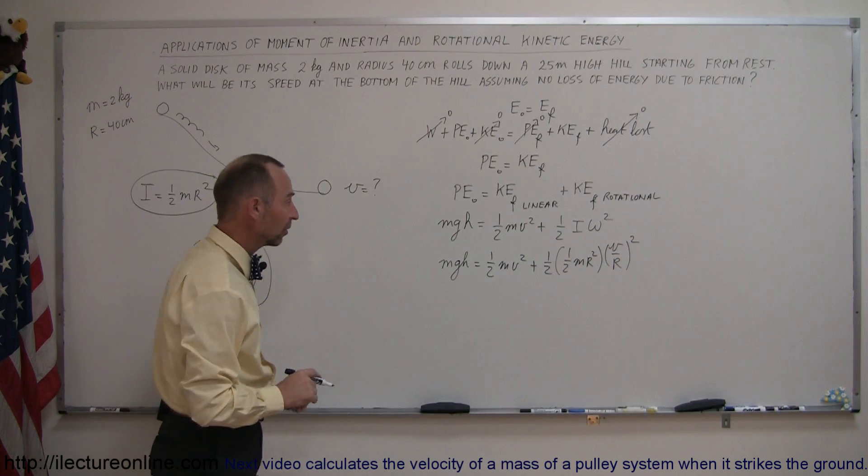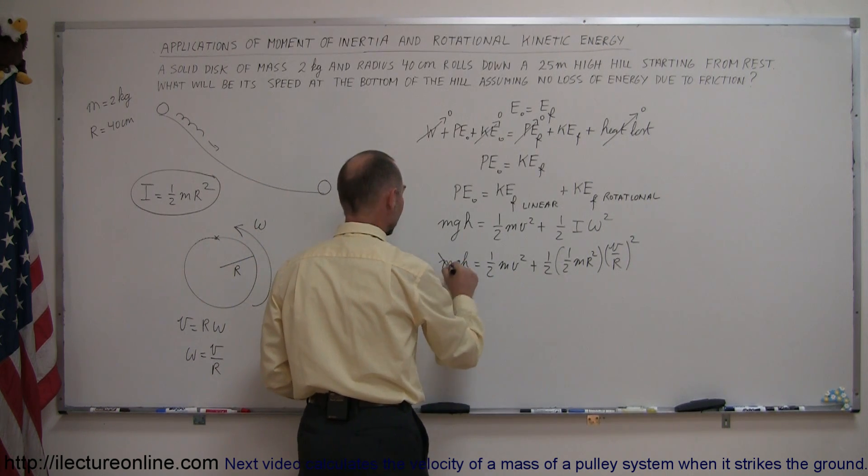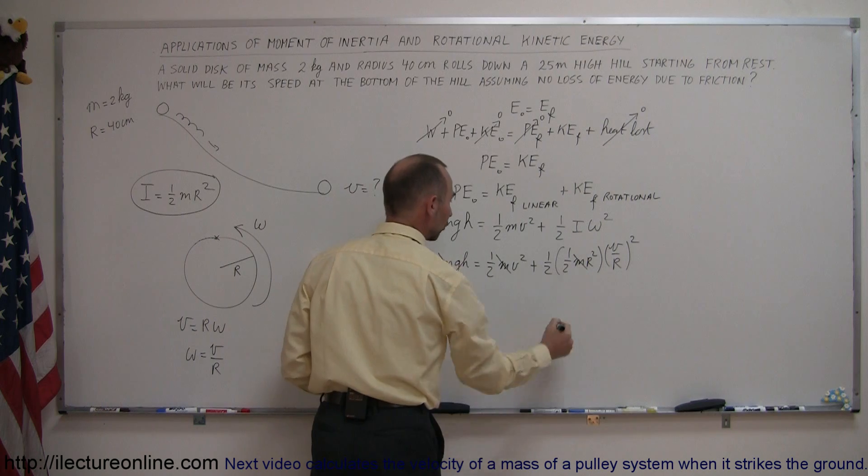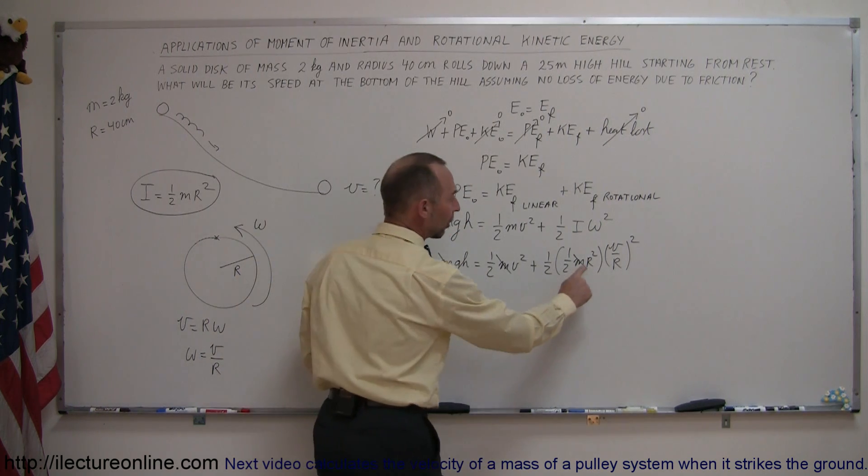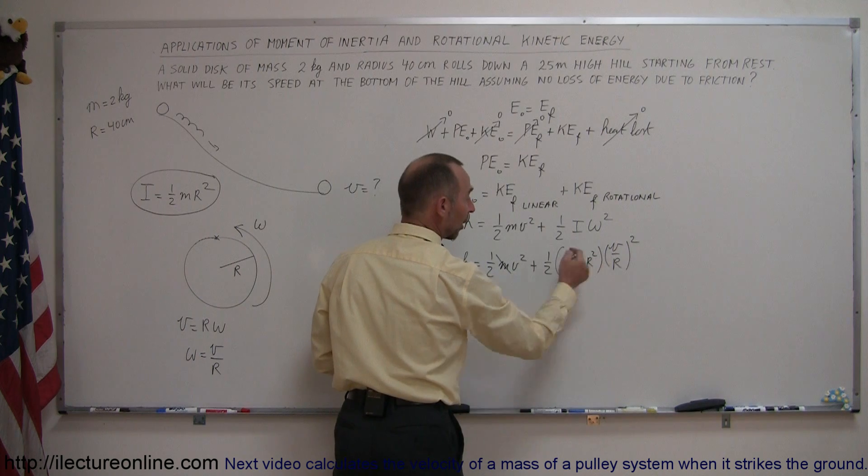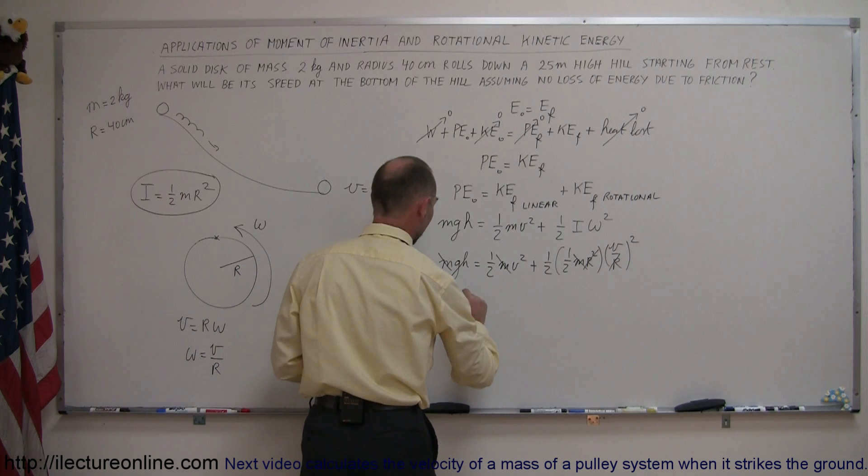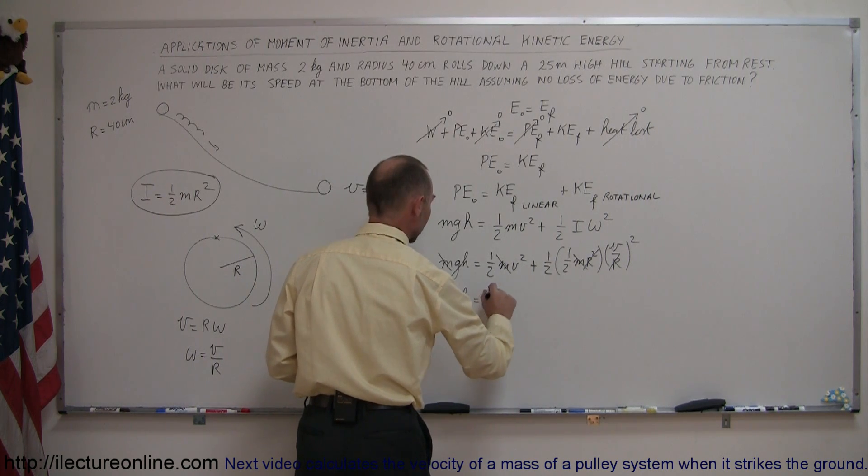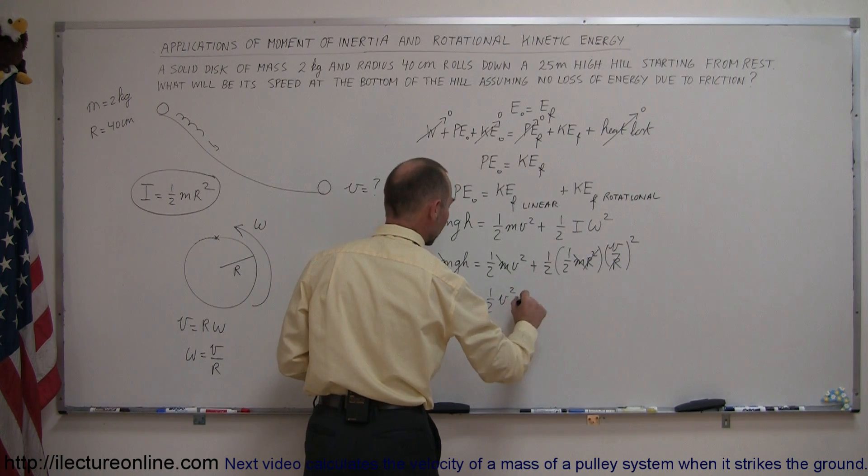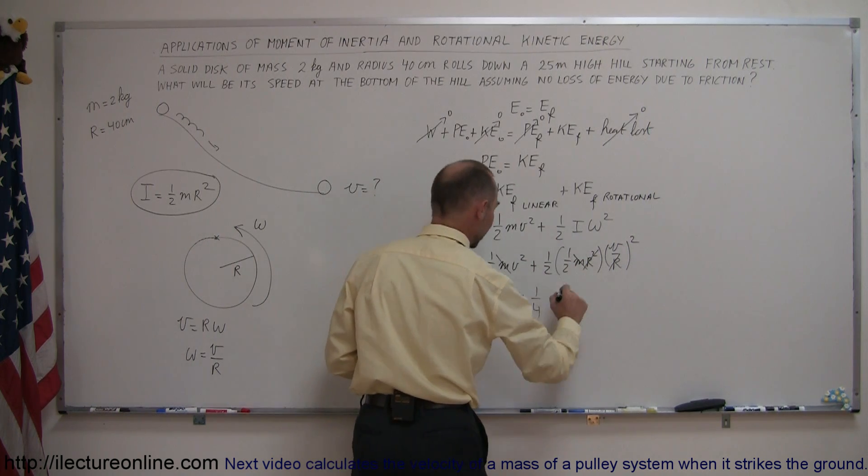Now, simplifying this, we can see already that every term on the left and the right side has an m, so that can cancel out. I can see an r squared here divided by one over r squared, so the r squares will disappear. And so this now becomes g times h equals one-half v squared plus one-half times one-half, which is one-quarter v squared.